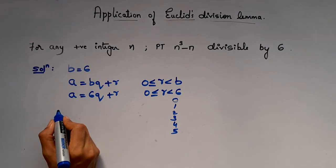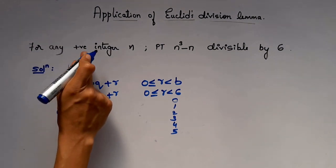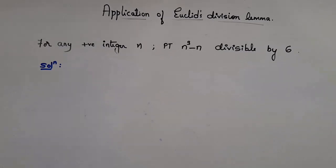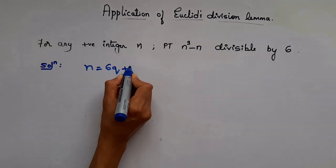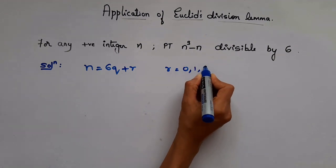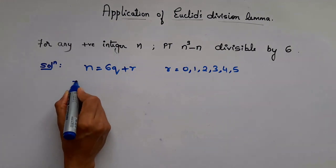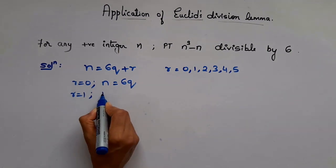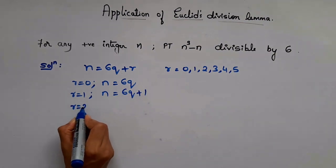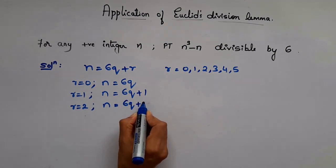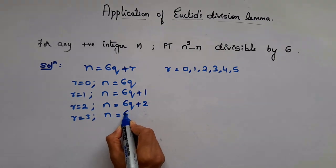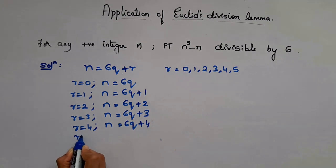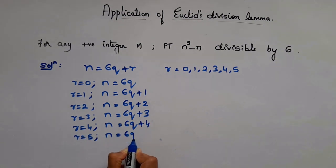Let a equal n. For integer n, we take a = n, so it will be n = 6q + r, where r can take the values 0, 1, 2, 3, 4, or 5. When r = 0, n = 6q. When r = 1, n = 6q + 1. When r = 2, n = 6q + 2. When r = 3, n = 6q + 3. When r = 4, n = 6q + 4. When r = 5, n = 6q + 5.